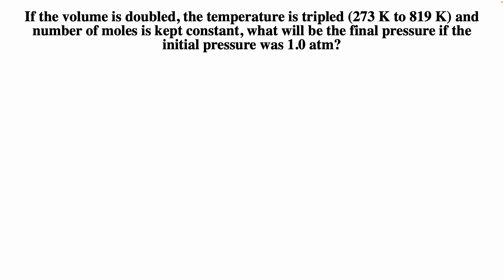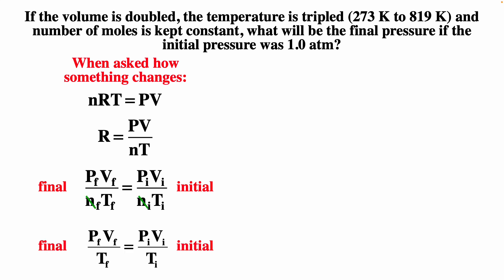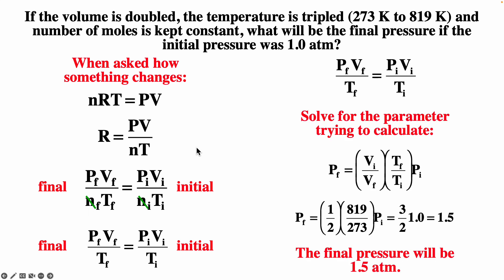If the volume is doubled, the temperature is tripled, and the number of moles is kept constant, what is the final pressure if the initial pressure was 1 atmosphere? N cancels. P_f = (V_i/V_f) × (T_f/T_i) × P_i = (1/2) × (819/273) × 1. The temperature ratio 819/273 equals 3, so (1/2) × 3 = 3/2 = 1.5 atmospheres.